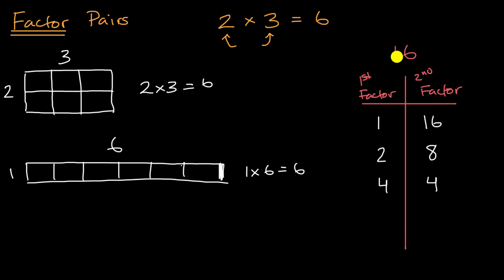What about five? Well no, five times two is 10, five times three is 15, five times four is 20. Five does not go evenly into 16. Same thing for six. Six times two is 12, six times three is 18, does not go evenly into 16. What about seven? Seven does not evenly go into 16. Seven times two is 14, seven times three is 21.